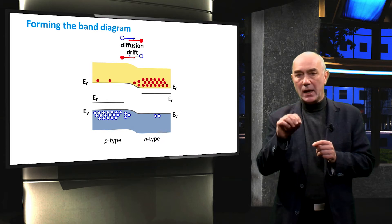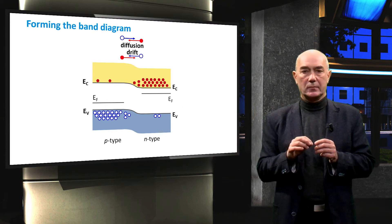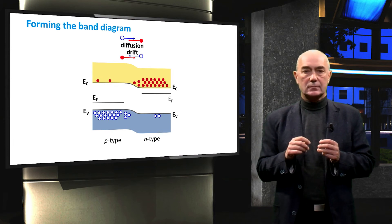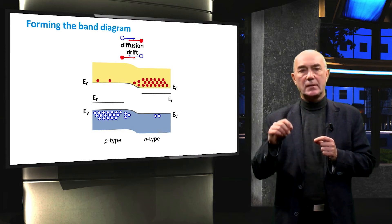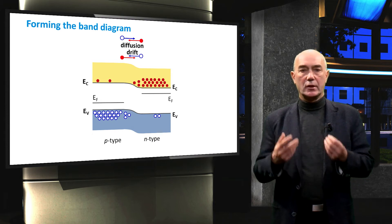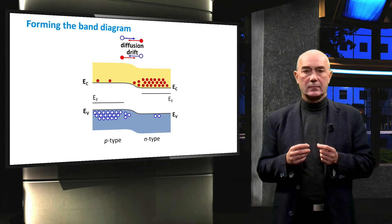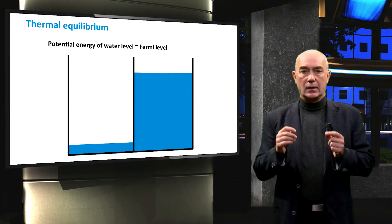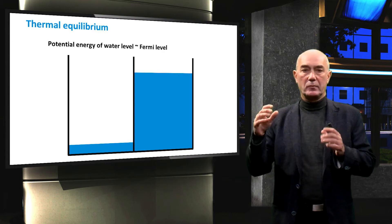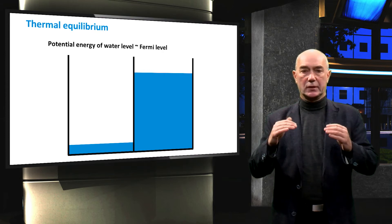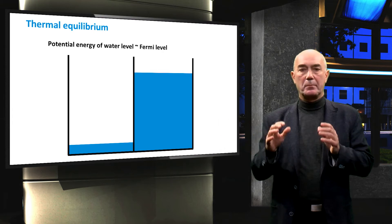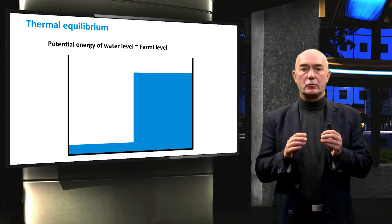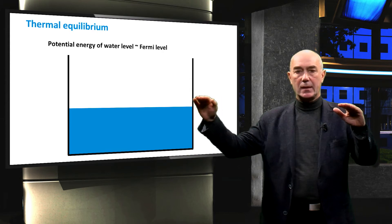So how far does the bending in the band diagram edges go? What will the final slope look like at thermal equilibrium? In order to answer that question, let's think of our semiconductor device in terms of something more familiar. When we put the P-type semiconductor in contact with the N-type semiconductor, you can imagine it like having two vessels filled with different volumes of water. When we remove the barrier between the two vessels, the water level will eventually be the same in both vessels.